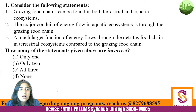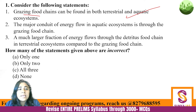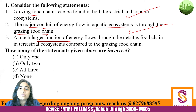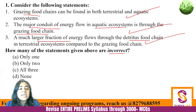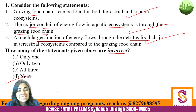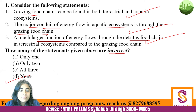So here: grazing food chain can be found in both terrestrial and aquatic ecosystems — absolutely correct. The major conduit of energy flow in aquatic ecosystem is through the grazing food chain — absolutely correct. A much larger fraction of energy flows through the detritus food chain in terrestrial ecosystem — absolutely correct. So nothing is incorrect. The answer is D. Remember it this way: on the terrestrial ecosystem, everyone wants to just eat each other and kill each other and survive.